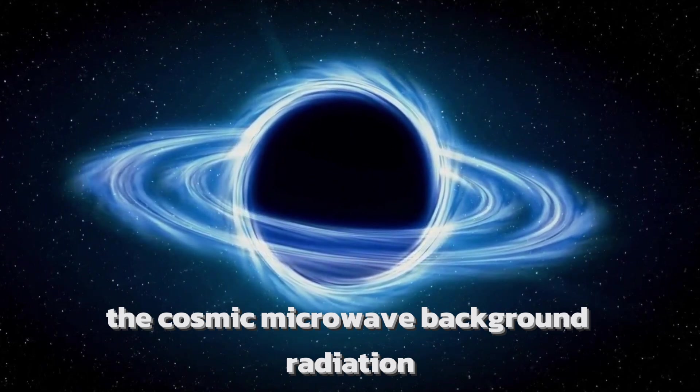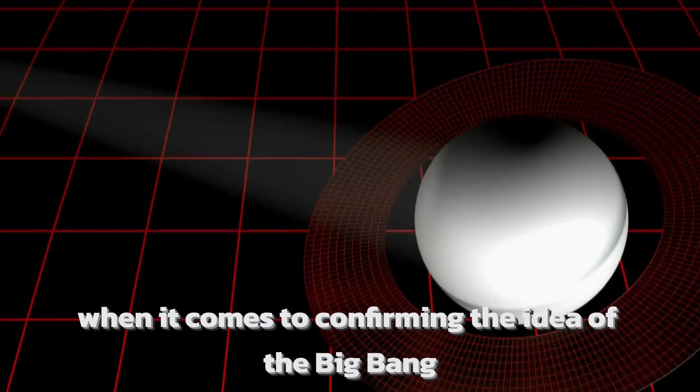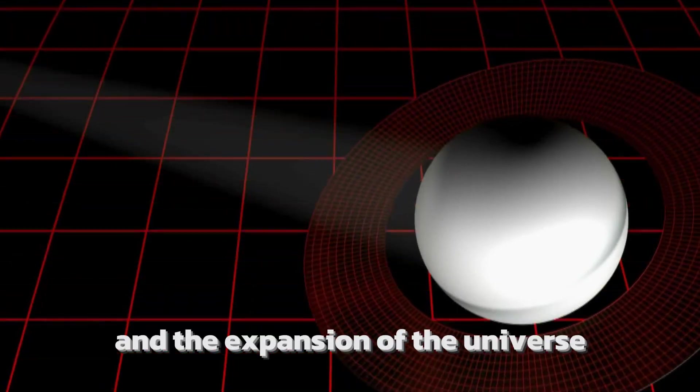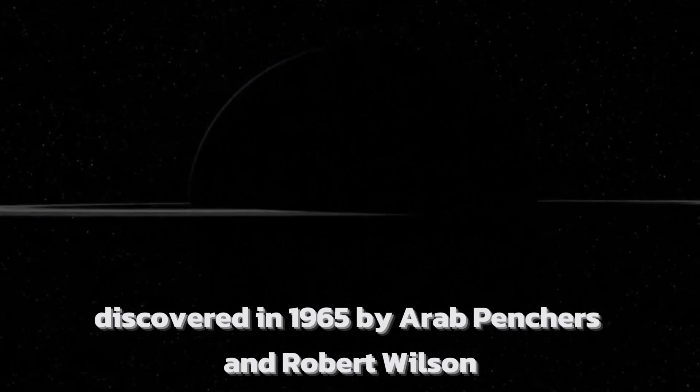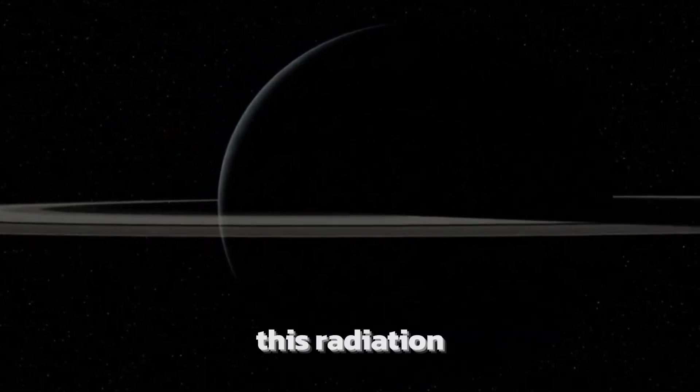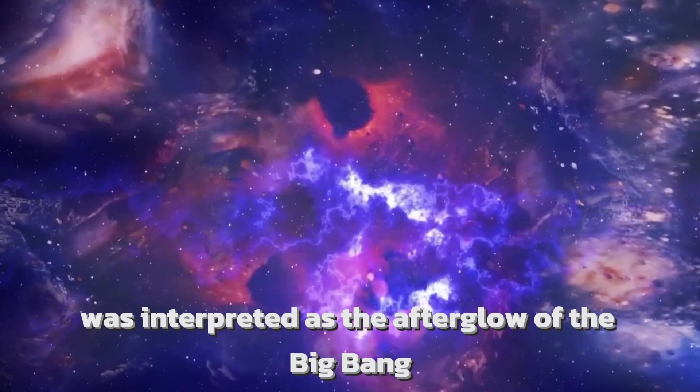The Cosmic Microwave Background Radiation, or CMB for short, is the classic when it comes to confirming the idea of the Big Bang and the expansion of the universe. Discovered in 1965 by Arno Penzias and Robert Wilson, this radiation, which is still omnipresent in space today, was interpreted as the afterglow of the Big Bang.